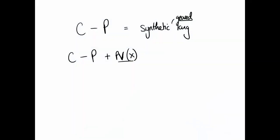At expiry, if the underlying has gone up, we exercise our call and pay the strike — but that's at expiry, not now. Similarly, if the underlying goes down, we get put to value at X, so we have to pay X for the underlying. So if we put the present value of the strike price on deposit today in a risk-free asset — just think deposit or risk-free bond — then that will actually give us a long position in the underlying S. Think of this as depositing cash or buying a bond to remove the gearing of the synthetic long position. Once you've removed that gearing, you've got an ungeared position in the underlying.